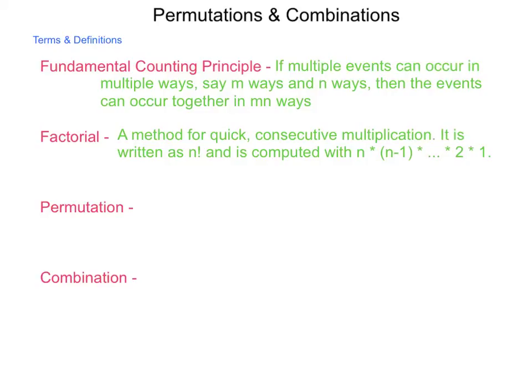Next, a permutation. This is an arrangement of items where the order is important. So, if you have to do things a certain way or changing them, such as watching a series of movies, you wouldn't watch the last movie, then the middle one, then the next, last, and the first. If the order is important, it's a permutation.